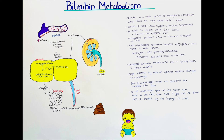However, some bilirubin is also excreted via the kidneys and urine. Not all urobilinogen becomes stercobilin — some of it is absorbed back into the intestines via the portal vein, or enterohepatic circulation, traveling back to the liver. From there it can enter the blood and be excreted into the urine via the kidneys and urinary tract.